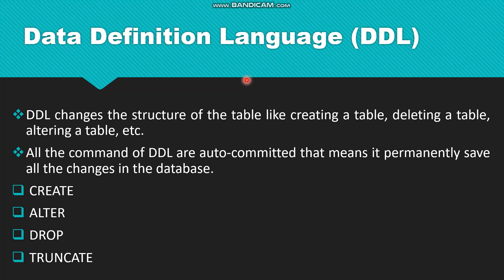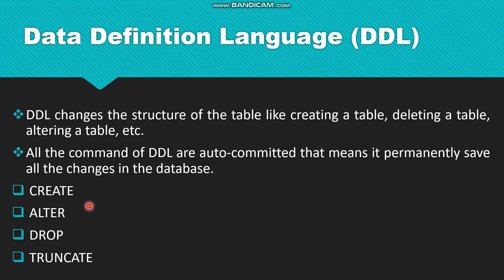Data Definition Language changes the structure of the table, like creating a table, deleting a table, or altering a table. All the commands of DDL are auto-committed, meaning they permanently save all the changes made in the database. We have four commands under DDL: create, alter, drop, and truncate. We will go through them one by one.